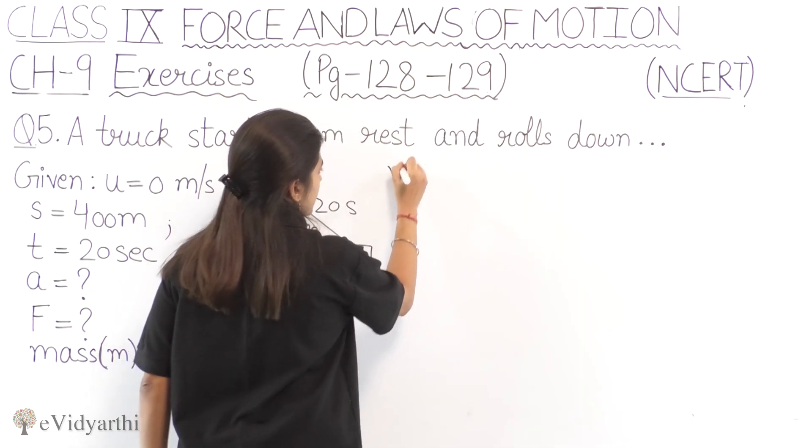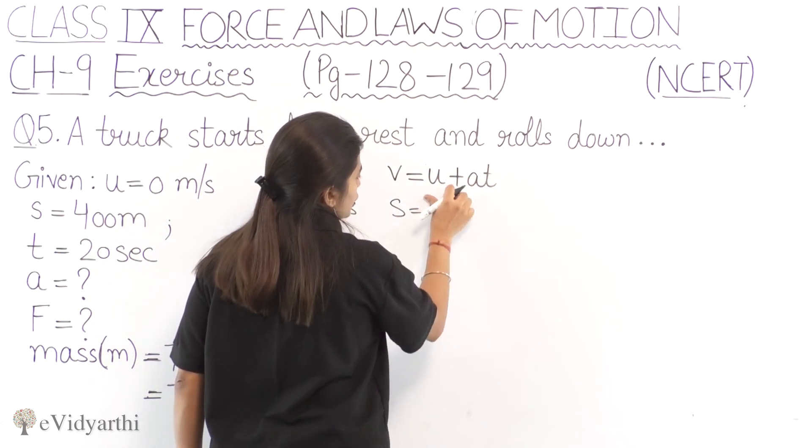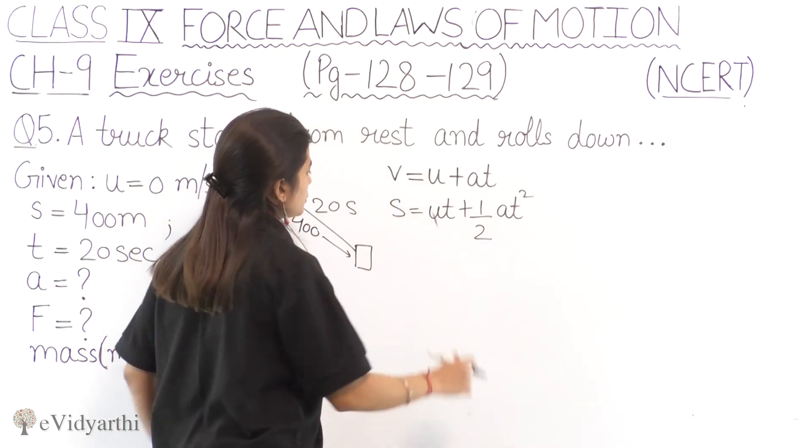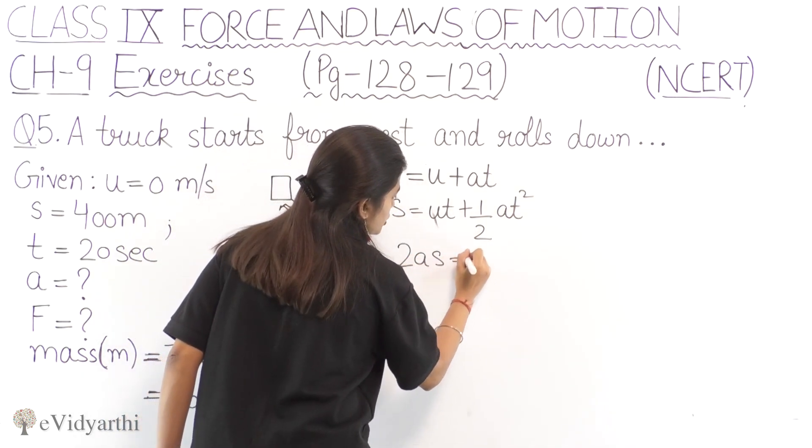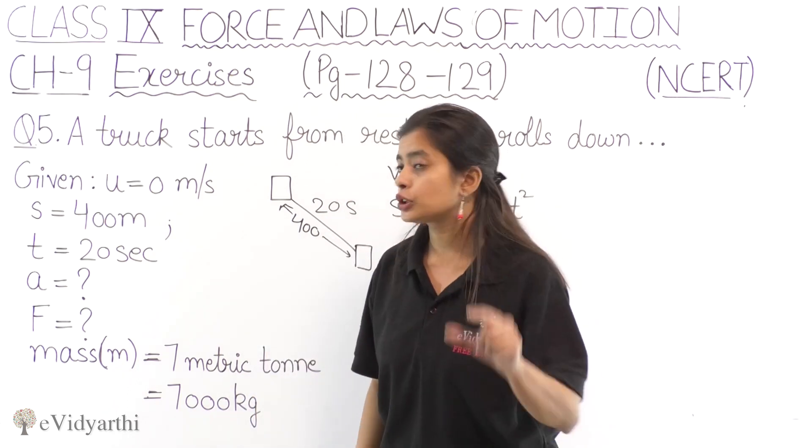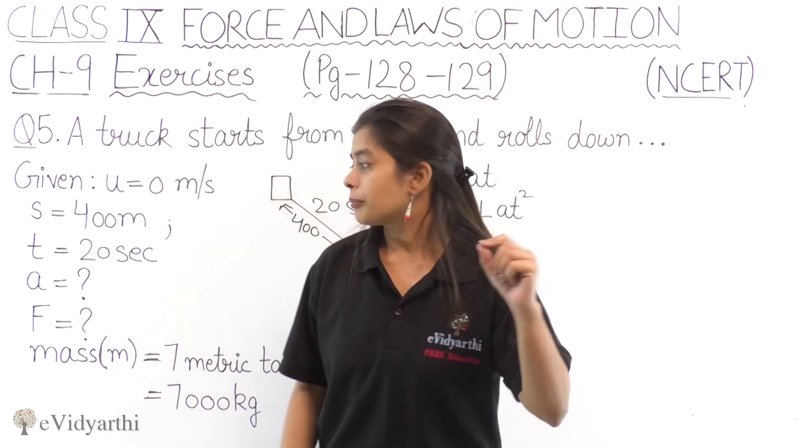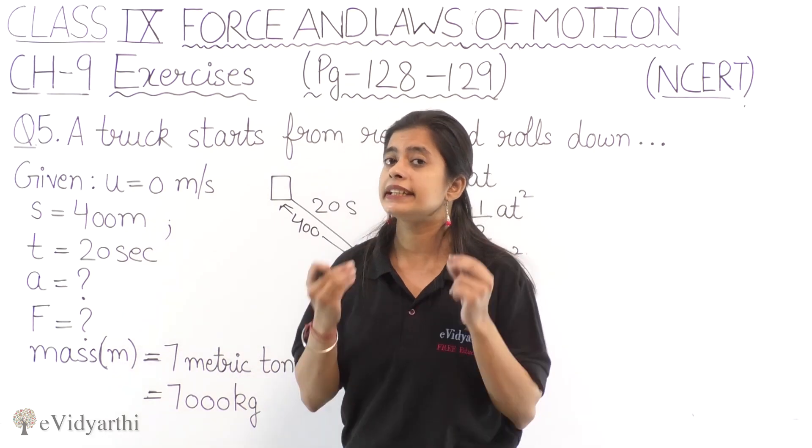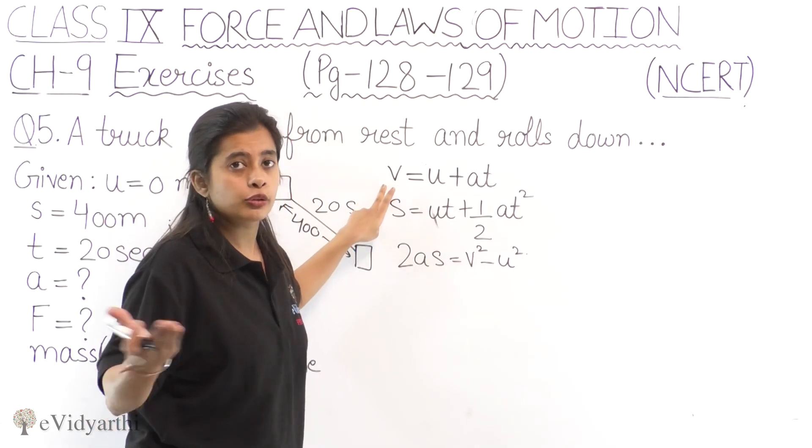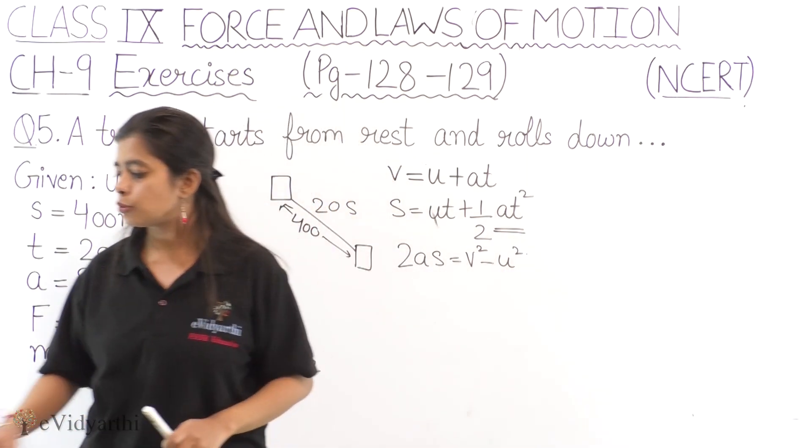So let's see which equation of motion to use. We have v equals u plus at, then we have s equals ut plus half at square, and the third one, 2as equals v square minus u square. So if we can see what we have given and what we need to find, then we can easily find out which equation is relevant. So now we can see that we have s distance, time, and we need acceleration. So the second equation, let's use the second equation.